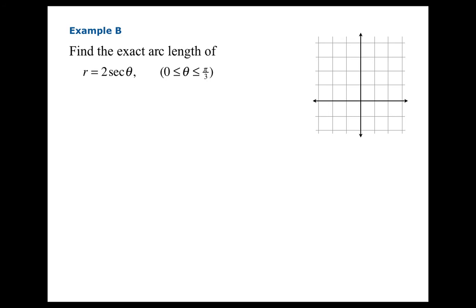Example B: find the exact arc length of r equals 2 secant theta, theta running from 0 to π/3. If you take that polar formula and rearrange it, r cosine theta equals 2, you recognize the left-hand side as x. So what we really have is a portion of the vertical line x equals 2. Since π/3 is 60 degrees and that base width is 2, basic geometry tells us that the height should be 2√3. So we know the answer is going to be 2√3 before we even make a calculation.